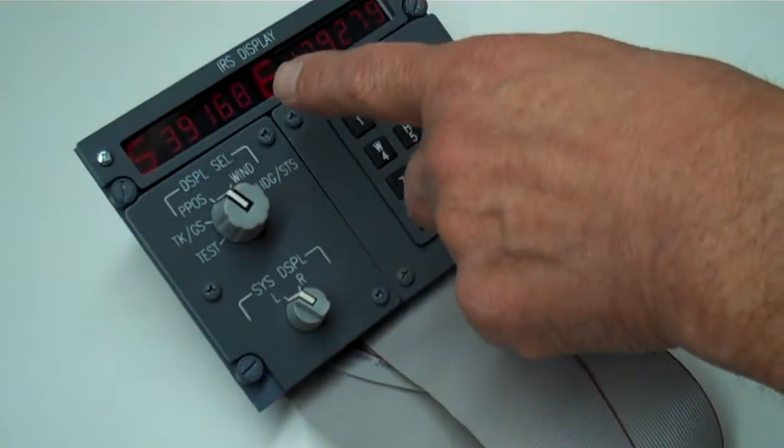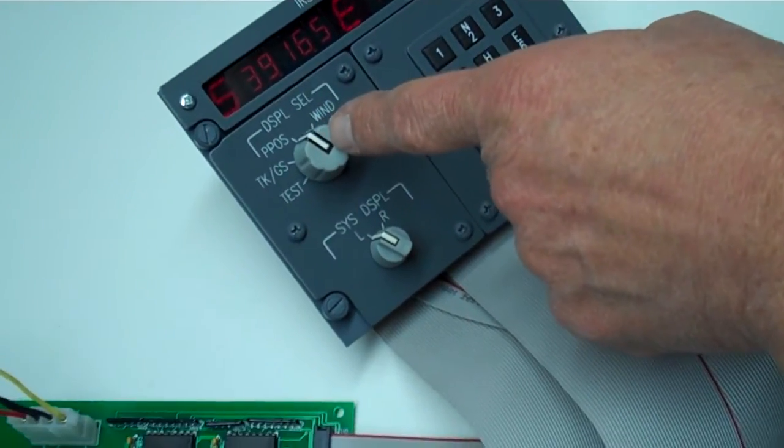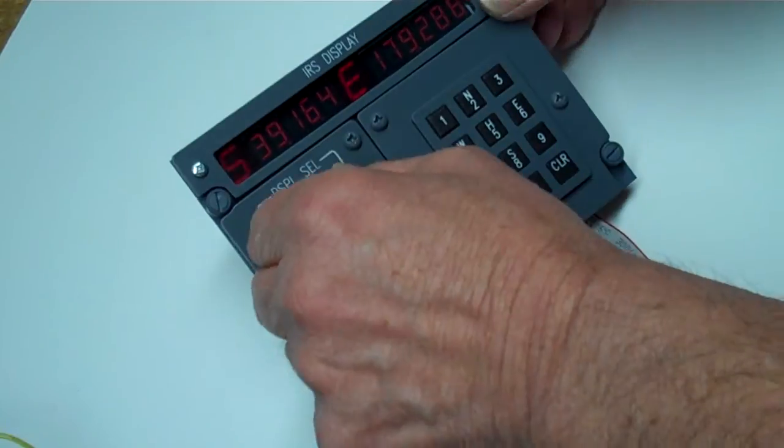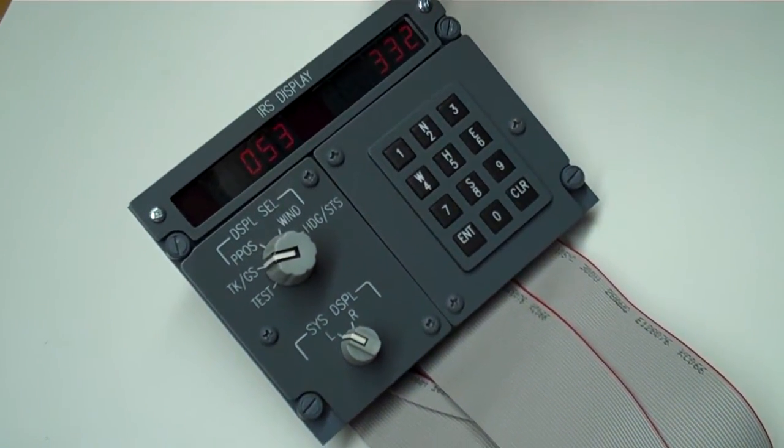Going back to the displays here, we have several different settings. This is set on present position. We can set it to track and ground speed. It shows us the track, current track and current ground speed.